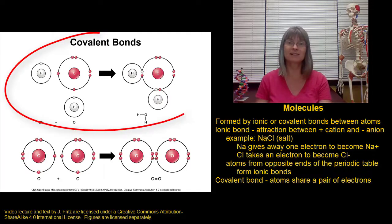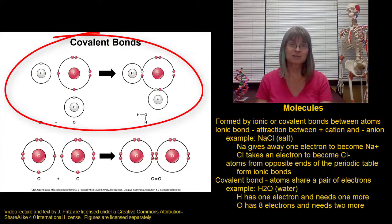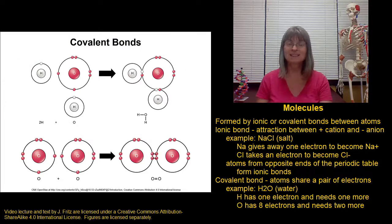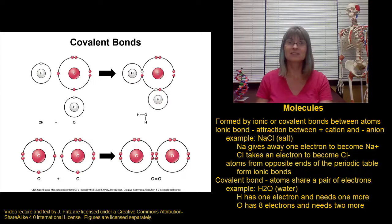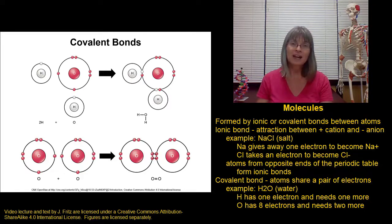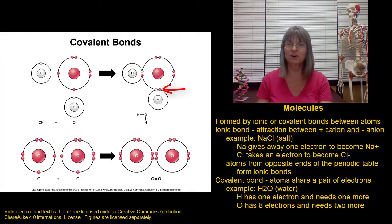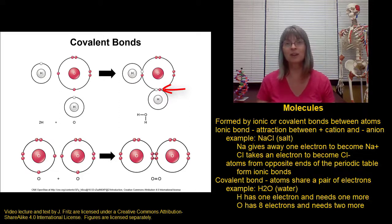Let's look at water as an example. Hydrogen has one lone electron and would really like to have two in its inner shell. Oxygen has eight electrons — two in the inner shell and six in the outer shell — meaning it really would like two more electrons in its outer shell. So one hydrogen atom comes up to the oxygen and they end up sharing a pair of electrons. One electron from oxygen and one from hydrogen are now shared between them, so both the hydrogen and the oxygen get to claim that electron and both feel more stable.